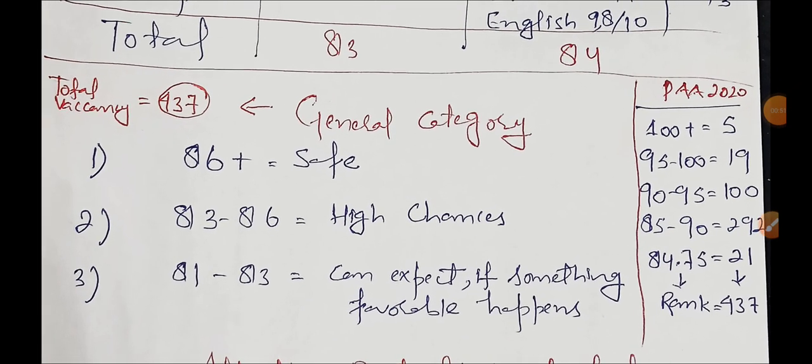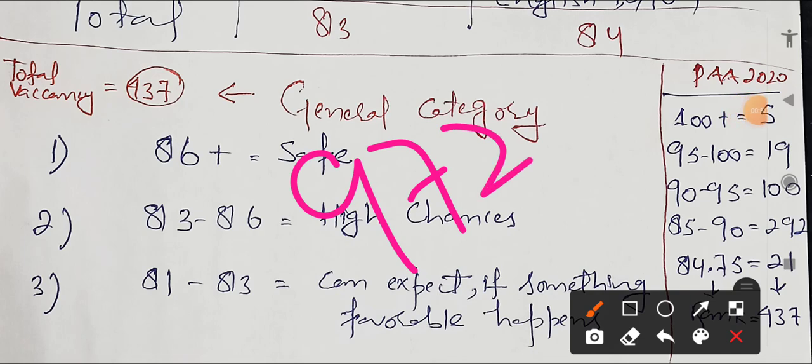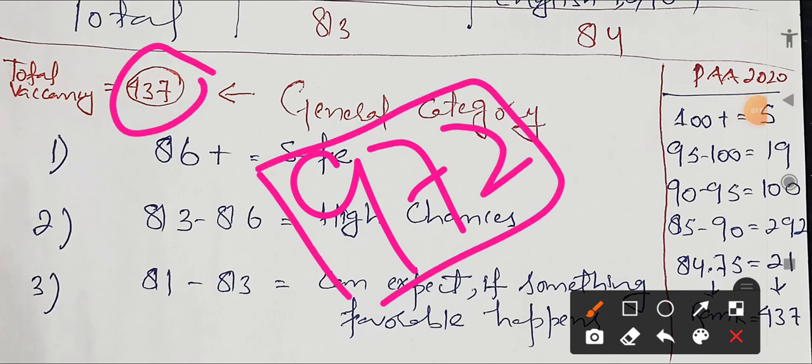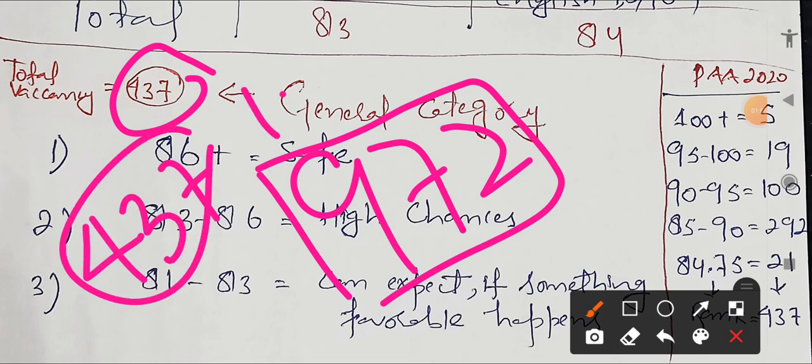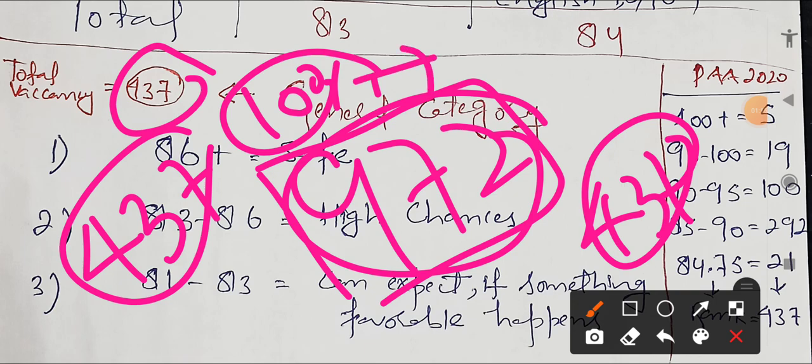We will talk about the general category. Overall, there are 972 posts here. After 10% horizontal reservation, we will discuss the general category. Out of 972 posts, after selection of 10% horizontal reservation to general category, we have 437 posts.